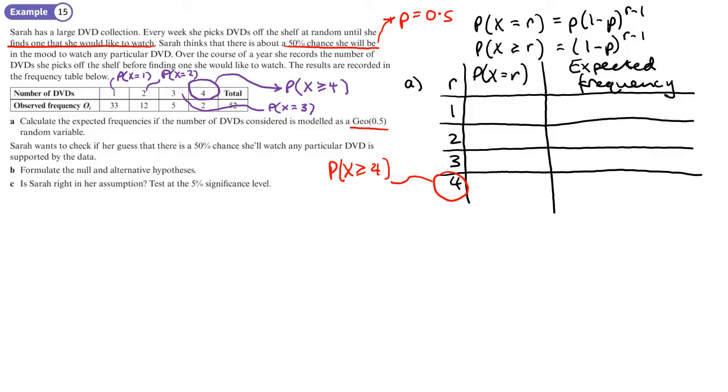So we'll write our working out. P is 0.5, so the working here is going to be 0.5 times 1 minus P, which is also 0.5, to the power of R minus 1, which is 0. Next one will be 0.5 times 0.5 to the power of 1. This one will be 0.5 times 0.5 squared. But on the final one, we use this formula here. So it's just going to be 0.5 to the power of 4 minus 1, 0.5 to the power of 3.